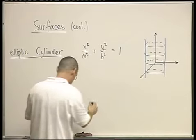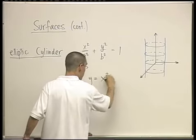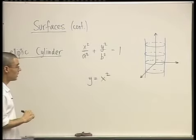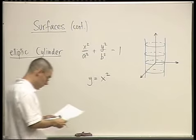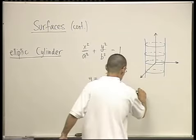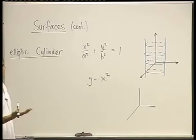So for example, y equals x squared, this thing, this is also a cylinder. So what is y equals x squared? Let's think for a minute. First of all, again, it doesn't see z, right?